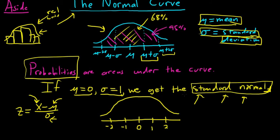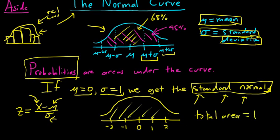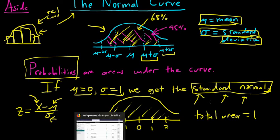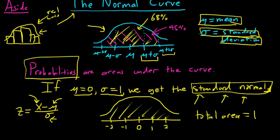Before we finish the video, one more useful thing: if you were to compute the total area under the curve, you would get 1. So if you find the area under the entire curve in any case, you get 1. In the next video, we'll compute some probabilities.